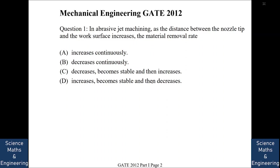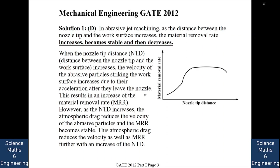Let's get started. In abrasive jet machining, as the distance between the nozzle tip and the work surface increases, the metal removal rate — does it increase continuously, decrease continuously, decrease then become stable and then increase, or increase then become stable and then decrease? The answer is D.